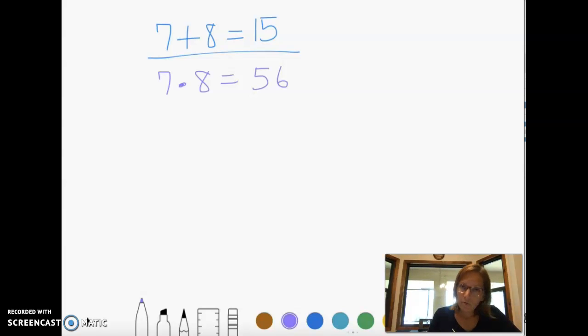And you could also use variables. You could have 5 times x, which would equal 5x. Multiplicative property.